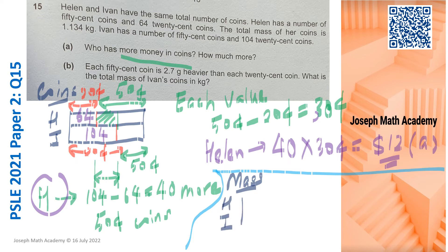Helen and Ivan. But now I have to draw a different model because Helen has more 50 cent coins. So Helen's bag of coins should be heavier than Ivan's bag of coins, because Ivan has more 20 cent coins, so should be lighter, lesser in mass. Looking at the question, Helen's total mass of coins is 1.134 kg. So we are supposed to find out what is Ivan's.